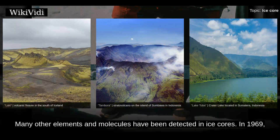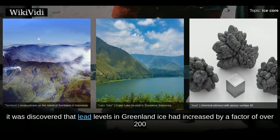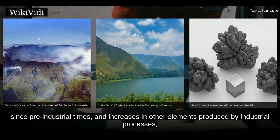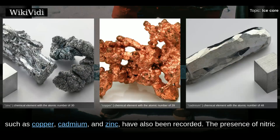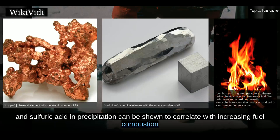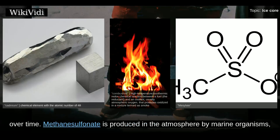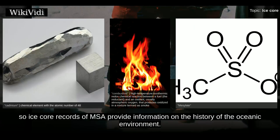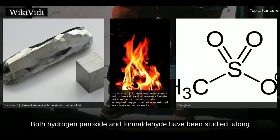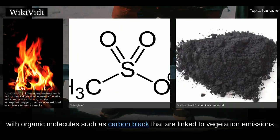Many other elements and molecules have been detected in ice cores. In 1969, it was discovered that lead levels in Greenland ice had increased by a factor of over 200 since pre-industrial times, and increases in other elements produced by industrial processes, such as copper, cadmium and zinc, have also been recorded. The presence of nitric and sulfuric acid in precipitation can be shown to correlate with increasing fuel combustion. Methanesulfonate is produced in the atmosphere by marine organisms, so ice core records of MSA provide information on the history of the oceanic environment. Both hydrogen peroxide and formaldehyde have been studied, along with organic molecules such as carbon black that are linked to vegetation emissions and forest fires.